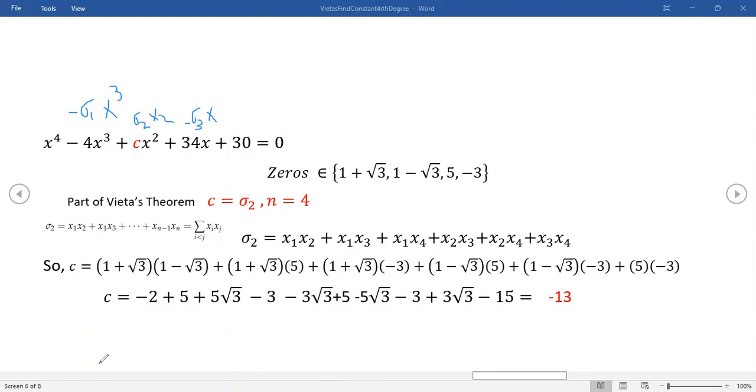Now, so Vieta's formula looks a little intimidating, but it's really pretty easy. You just sum up through all possible pairs for sigma sub two, and that's the one we're interested in right here. We're trying to find C. And so notice these are all zeros. We could call this one x sub one, this one x sub two. Now the order is just arbitrary, the order that the zeros appear, and it's not going to affect anything. That's why they call it symmetric. But so x sub three, and then x sub four. So that would read x sub four is negative three, x sub three is five, x sub two is one minus root three, and x sub one is one plus root three.